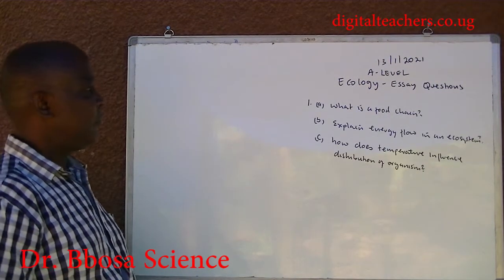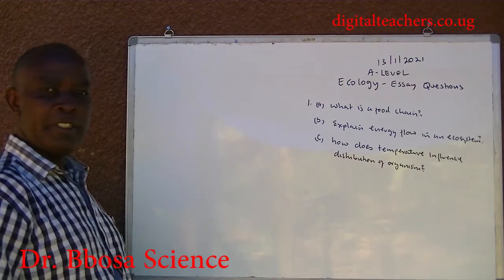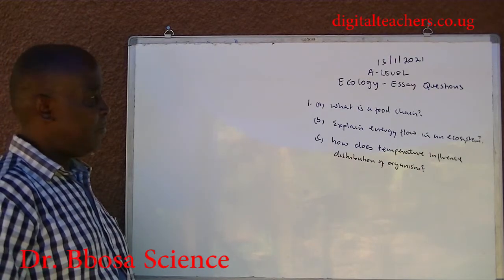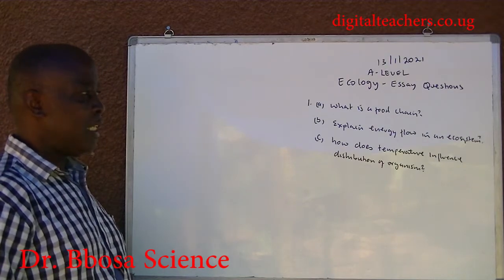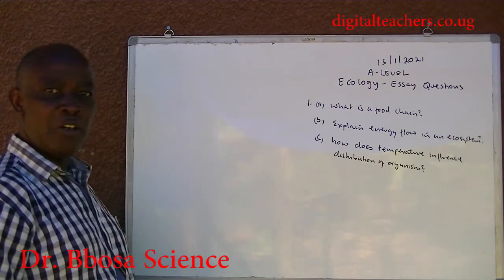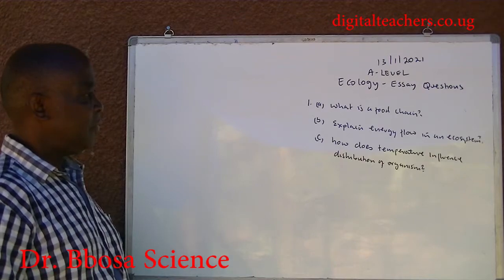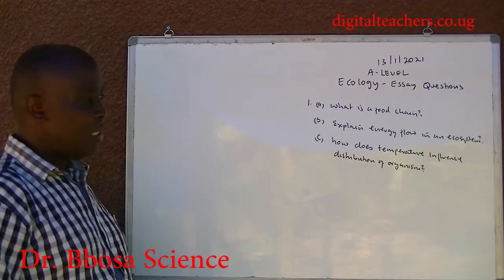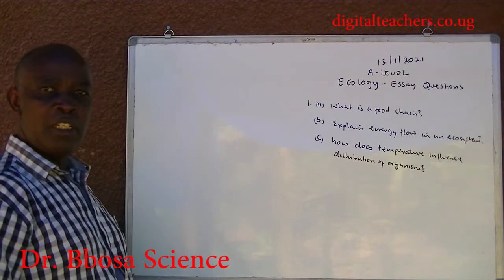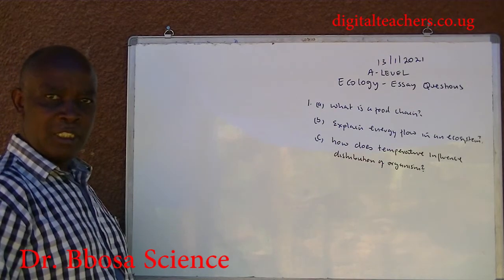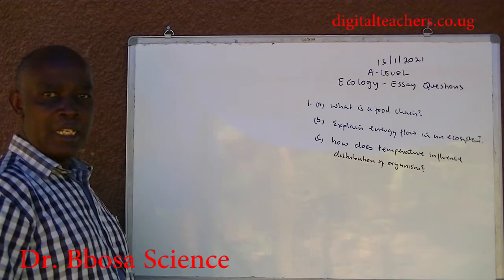Number 1. A: What is a food chain? B: Explain energy flow in an ecosystem. C: How does temperature influence distribution of organisms? You can pause and answer.